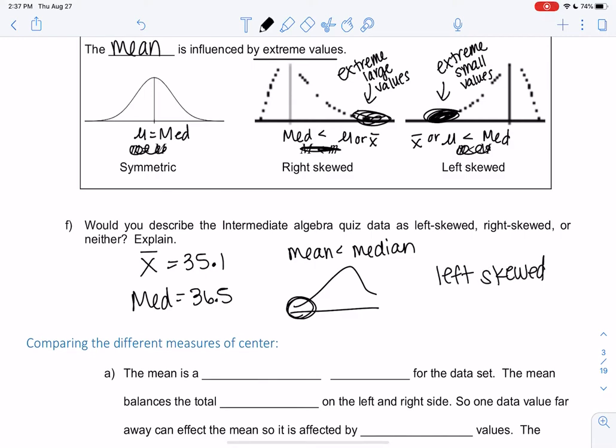The skewness is basically whatever direction the mean is. So if the mean is smaller, it's left-skewed. If the mean is bigger, it's right-skewed.